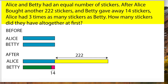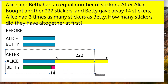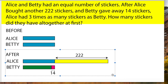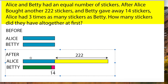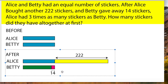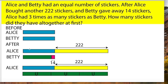Now you have to draw the after model. You will have Alice before, and Betty before, but then minus 14, because Betty gave away 14 of her stickers. And since Alice bought 222 stickers, you have to draw an extra 222 stickers in her model, as shown here.